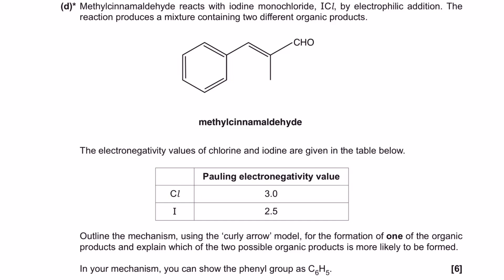It also involves an unfamiliar electrophilic addition which uses an unsymmetrical electrophile which you then need to use the Pauling electronegativity values to determine the dipole on.